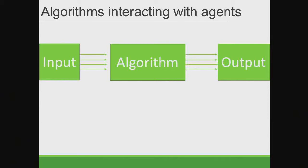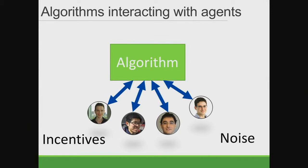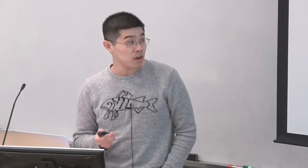When I first learned algorithms, I think of it as taking some input and producing some output. However, in some scenarios, algorithms are interacting with agents. These agents can be very strategic — they want to maximize their own utility functions. Sometimes they are not that strategic, but due to limits of knowledge, effort, or subjective preferences, the data they provide might be noisy. These factors can completely change the solutions of problems.